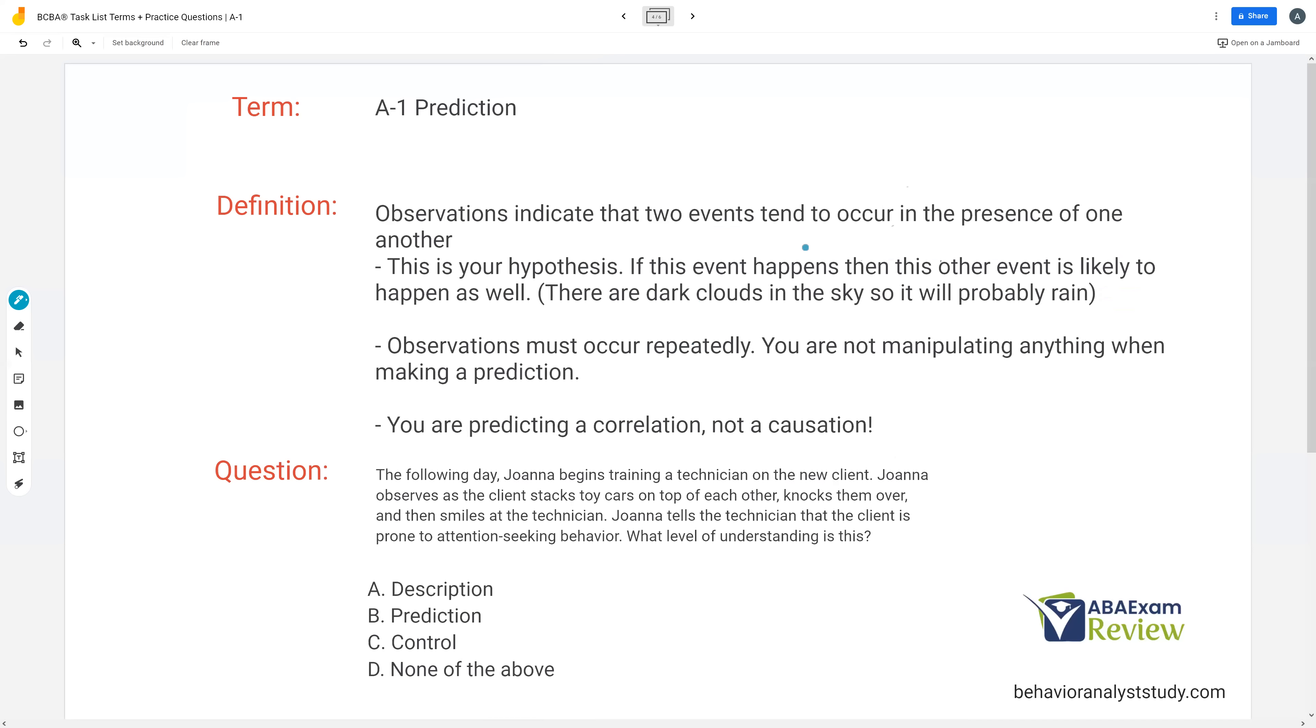If this event happens, this other event is likely to happen as well. You see dark clouds in the sky, well, it's probably going to rain. Because in the presence of dark clouds, typically rain is produced. First, very important that observations occur repeatedly. We don't observe one time, and then we form all our predictions off that one observation. Remember, we have to see these things over and over and over again. Behavior should be repeatable.